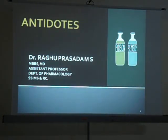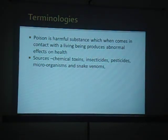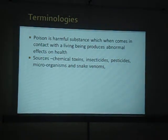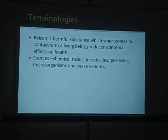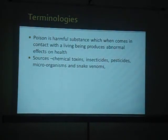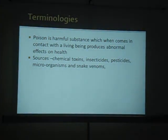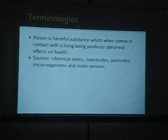So what is poisoning? Poisoning is a harmful substance which comes in contact with living beings and produces abnormal effects on health when ingested in a toxic concentration. That point we need to remember - when they are ingested in a toxic concentration. It may be physical exposure, ingestion, or intravenous administration; anything can be possible.